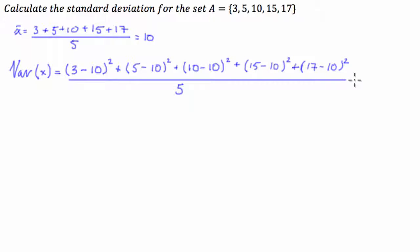So that's why we square the numbers. So this is going to be 49 plus 25 plus 0 plus 25 plus 49. So 49 plus 49 is 98, plus 50 is equal to 148. And that's going to divide that by 5.